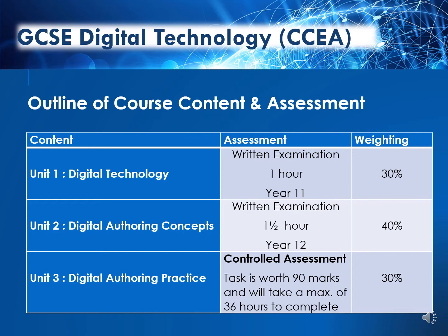In Year 12, pupils will study Units 2 and 3. Unit 2 is Digital Authoring Concepts, where pupils will gain an understanding of all digital systems. This theory is closely linked to coursework and will be examined in a one and a half hour exam in Year 12. This exam is worth 40%.